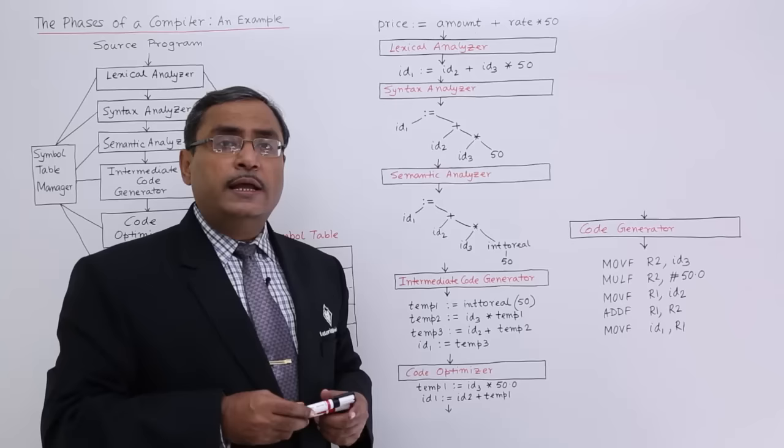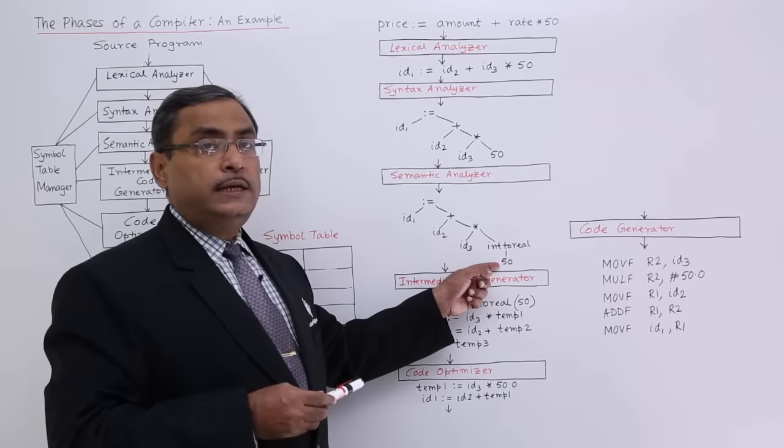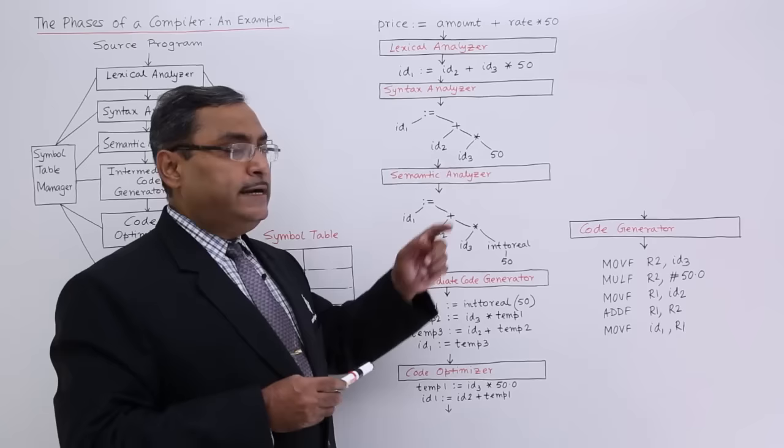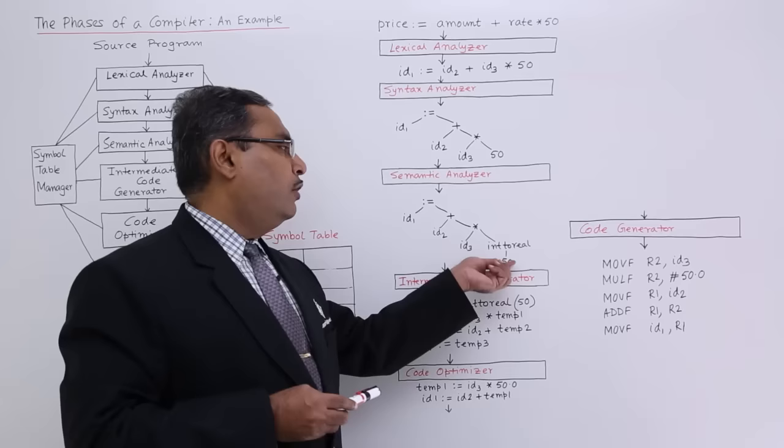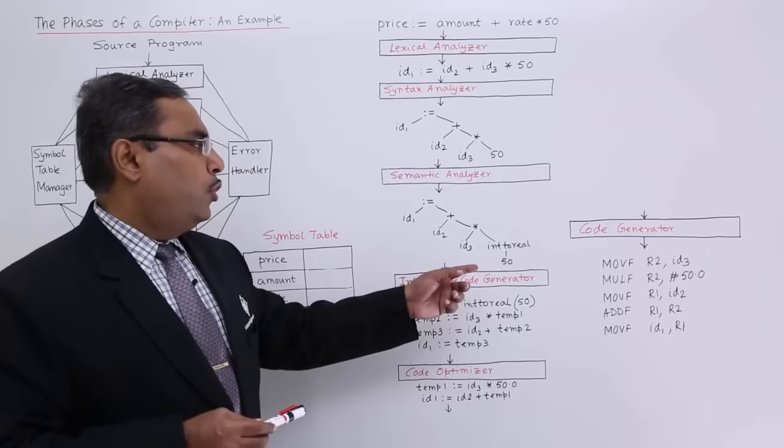Now it comes to the semantic analyzer. The value 50 was an integer, but the variables (identifiers) were of type real. Therefore, integer-to-real conversion will be done by the semantic analyzer — it will change the meaning of 50. Auto type upgrade will take place.